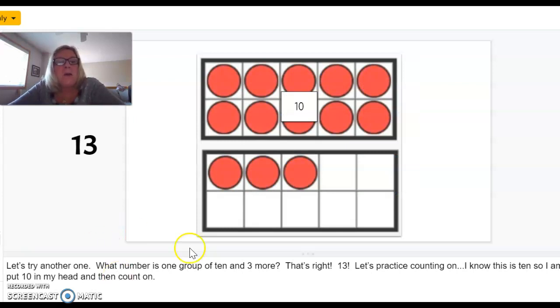All right. Let's try another one. What number is one group of 10 and three more? That's right. It is 13. Let's practice counting on together again. I know this is a 10. I don't have to count it because it's filled in. So, I know it is 10. So, I'm going to put 10 in my head and then count on. Remember, this is a math strategy you can do in your brain. So, say 10 with me. 10, 11, 12, 13.